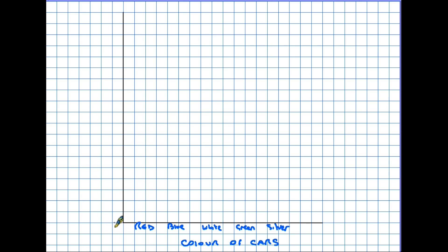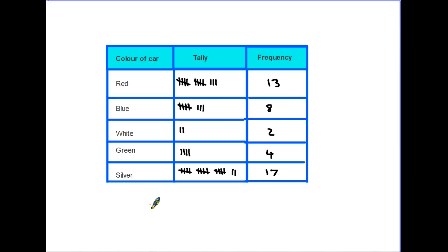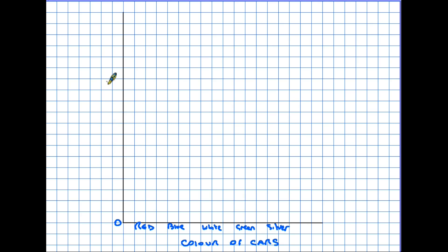Up the side then we're going to have the numbers of cars. Now the rule is we start at zero and when we decide what numbers we are going to put up the side we go in even steps all the way up. The best way of doing this is to go back to our frequency table and look at the most popular color of car, in this case it's silver with 17, so my numbers are going to have to go up to 17. So in this case I am going to put 2, 4, let's see how this fits, 6, 8, 10, 12, 14, 16, 18.